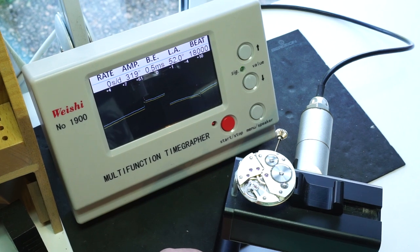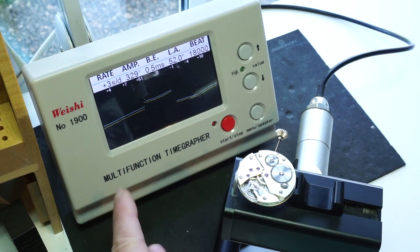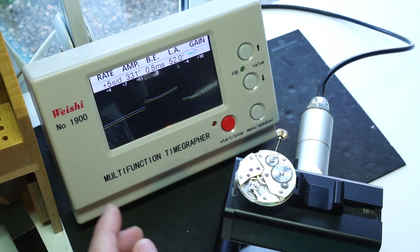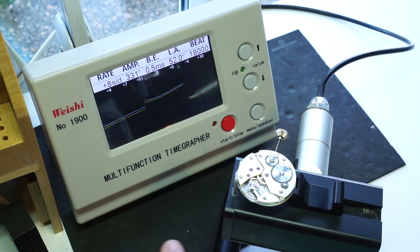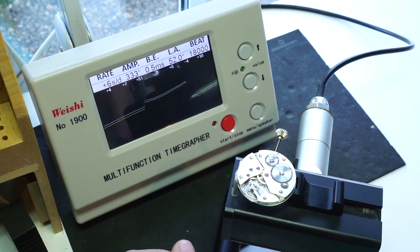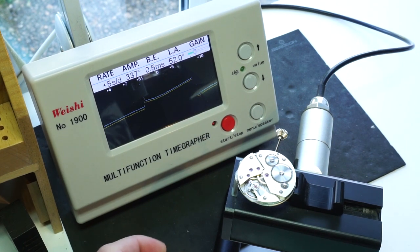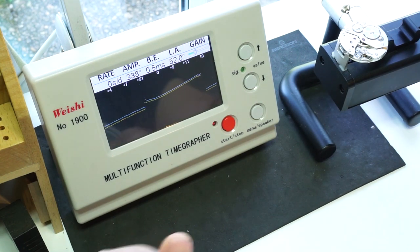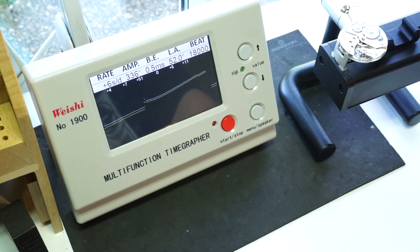This is just a very quick video touching on the timing of the movement. There are going to be some other videos where I'm going to go over how a timegrapher works and how to read the different readings that come up on timegraphers because they can be quite confusing. That will be in later videos. I'm also going to show you how to solve problems with timing, and I'm going to find an example movement to use where I can show you how those problems crop up. But for now, we're going to put this to one side and let it run for a couple of days. Then we're going to make the final adjustments to the timing before fitting it back into the case.